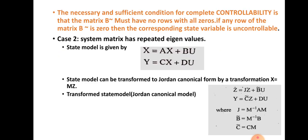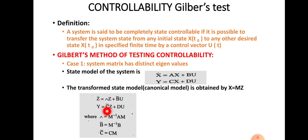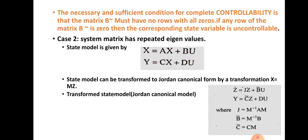The necessary and sufficient condition for complete controllability is that the matrix B̂ must have no rows with all zeros. If any row of the matrix B̂ is all zero, then the corresponding state variable is uncontrollable. So the main condition is that in the B̂ matrix there should not be any all-zero rows.